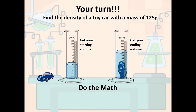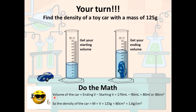If you did it correctly, here's what should have happened. First, you calculated the volume of the car: ending volume minus starting volume equals 170 mL − 90 mL = 80 milliliters, or 80 centimeters cubed. Then, density equals mass divided by volume: 125 grams ÷ 80 cm³ gives a density of 1.6 grams per centimeter cubed.